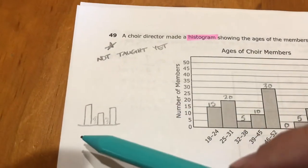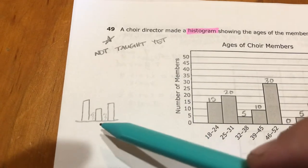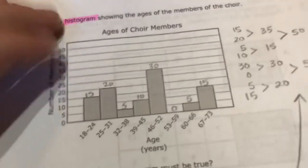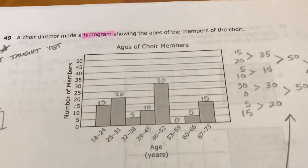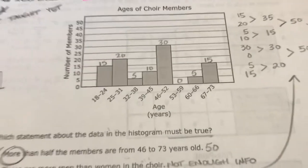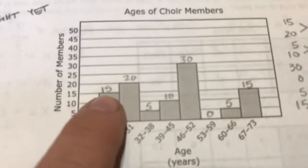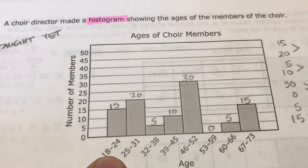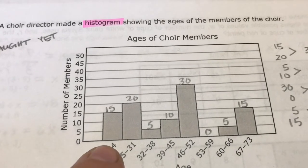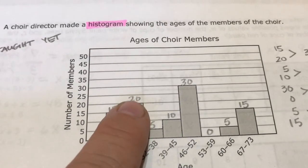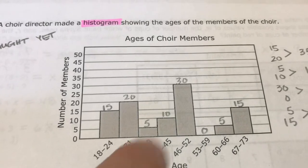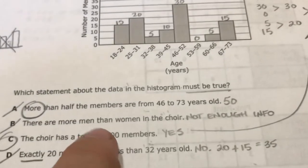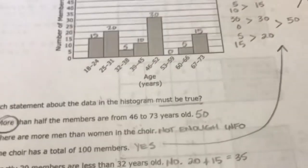So a histogram is not really a bar graph. But when you look at this, it shows the ages of people in the choir. So it means that 15 people are in this range between 18 years old and 24 years old, and 20 people are in this range, 5 people in this range, and so on. And it says which statement about the data in the histogram must be true?